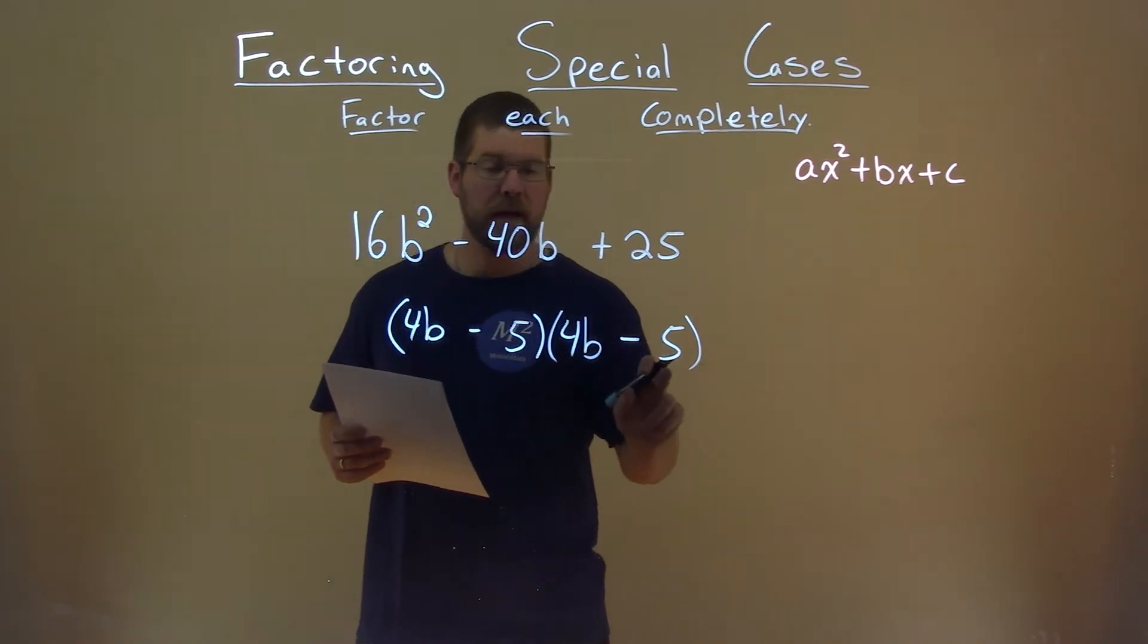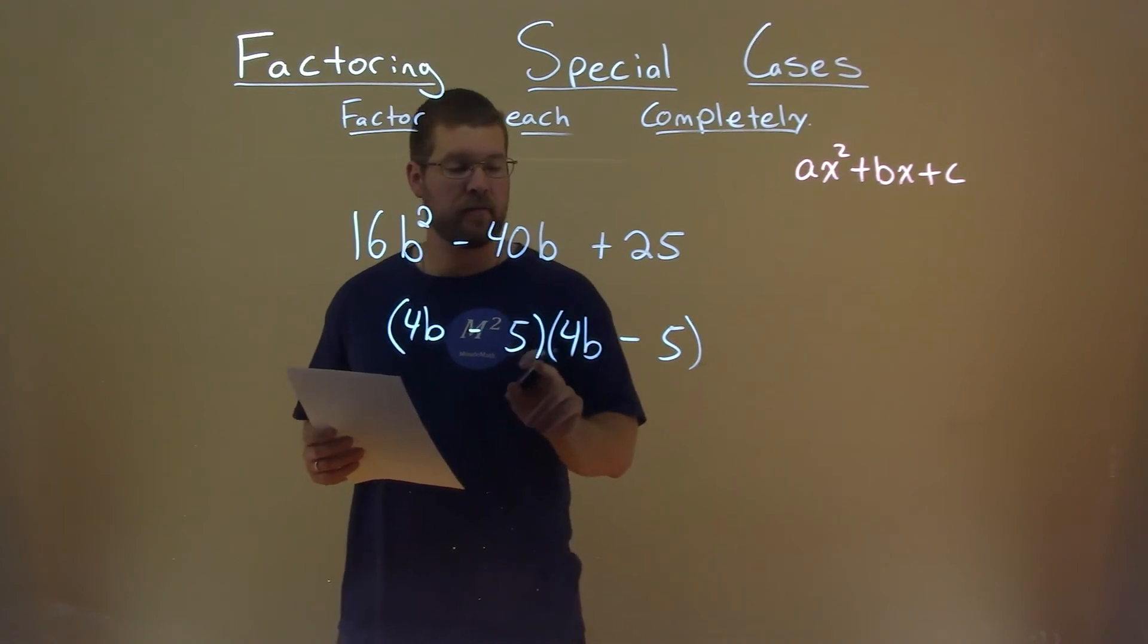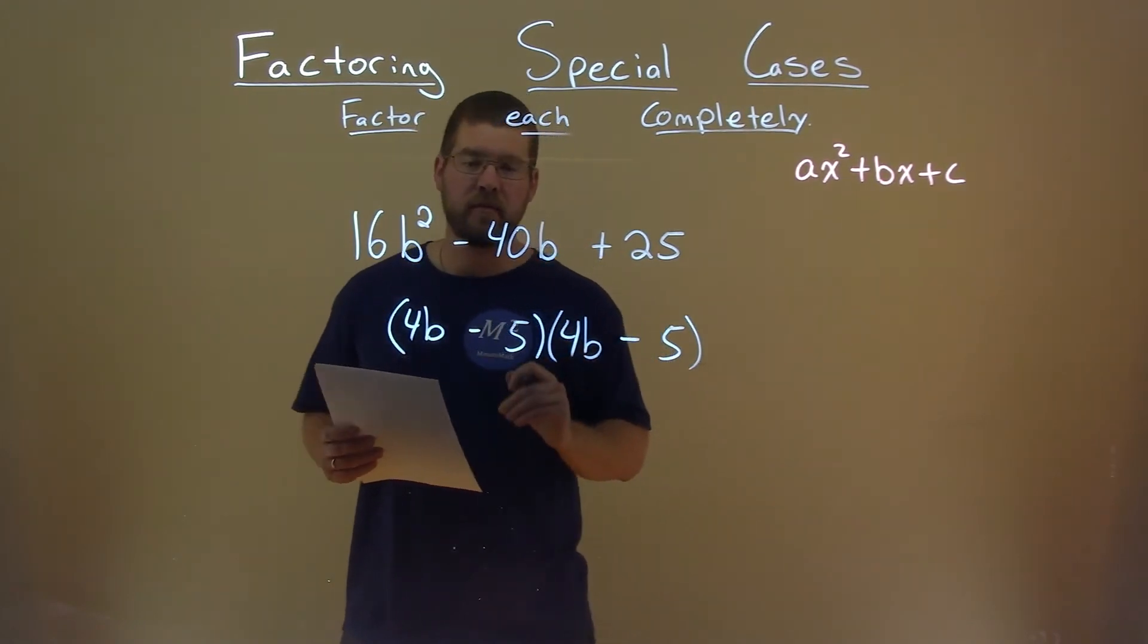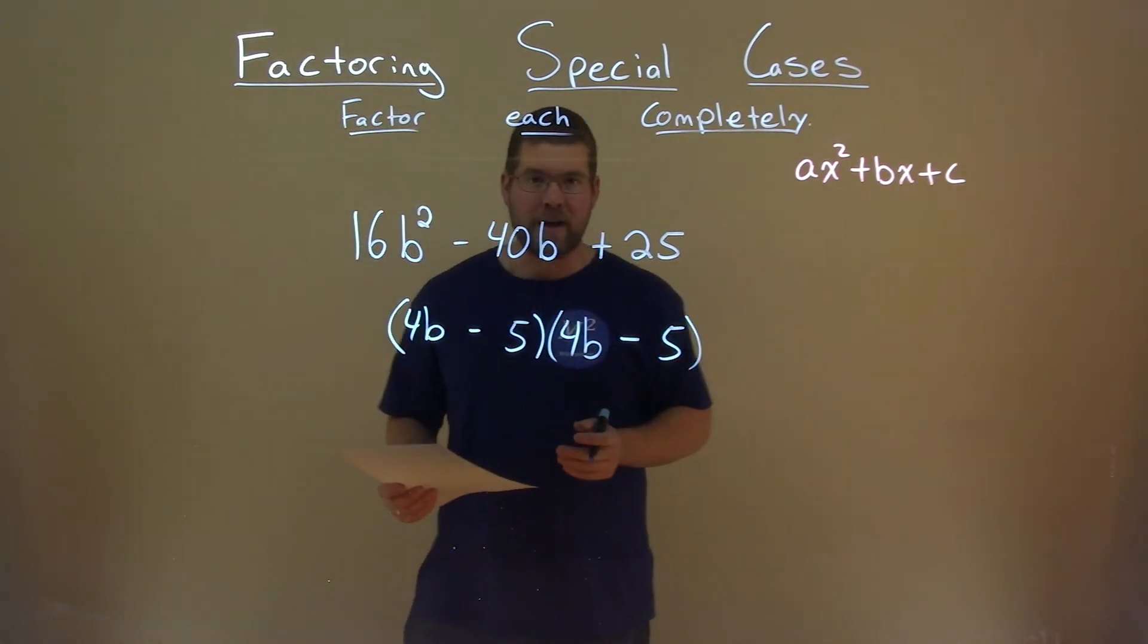4b times negative 5 is a negative 20b. Do that again, negative 5 times 4b is a negative 20b. Add those together, we got that negative 40b, and now we factored this.